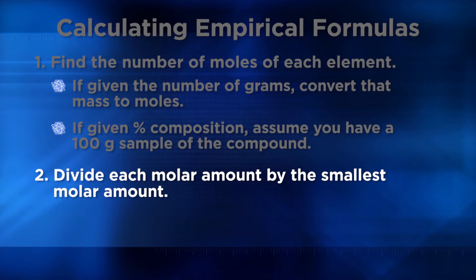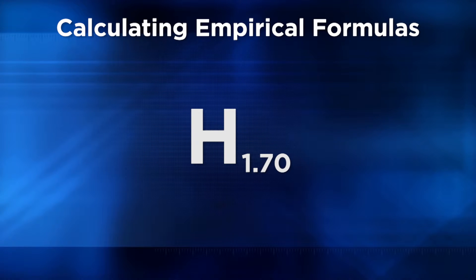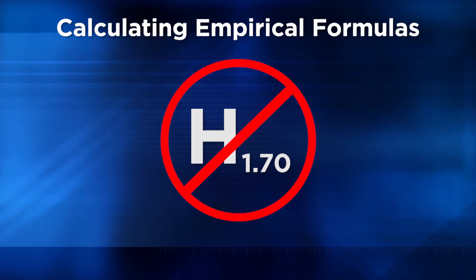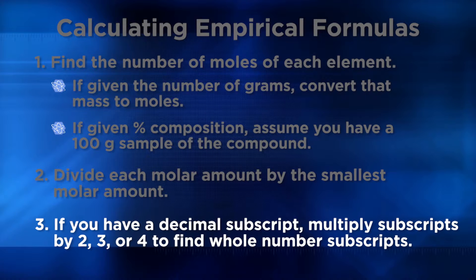Once you have the moles of each element in the sample, divide each molar amount by the smallest molar amount. An empirical formula represents the lowest ratio of the elements in the compound, which is why this step is necessary. Note that an empirical formula cannot have a decimal value as a subscript — a formula like H1.7O makes no sense, as a molecule can't have 1.7 hydrogen atoms. When necessary, you may have to multiply the subscripts by 2, 3, or 4 in order to get the subscripts to whole numbers.